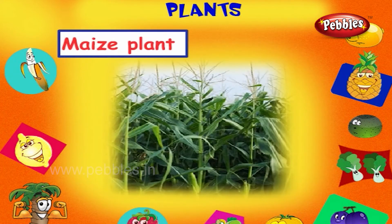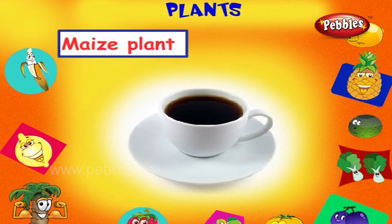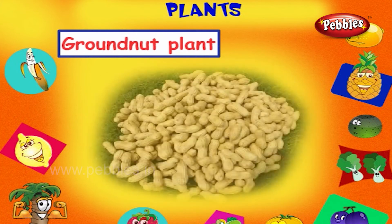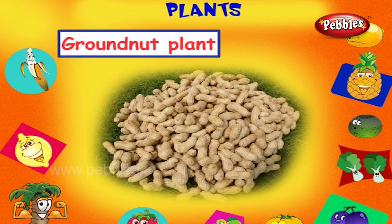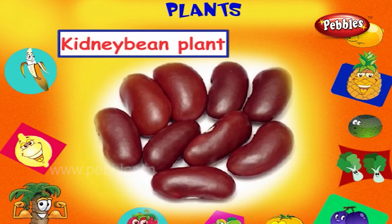This is a maize plant, it gives maize. It is used as food and to make health drinks. This is a groundnut plant, it gives us groundnut. This is a kidney beans plant, it gives us kidney beans.